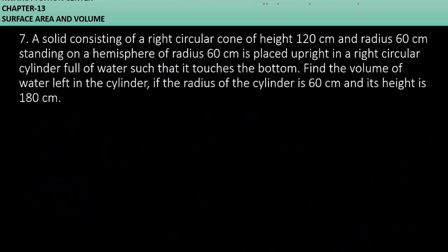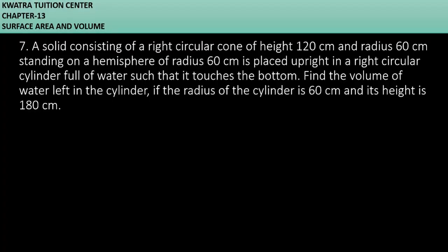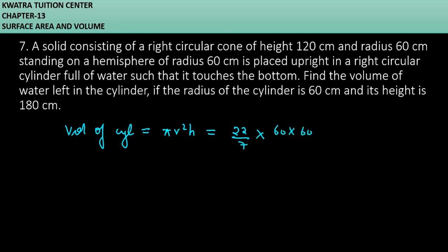Next, we calculate the volume of the cylinder, which is πr²h. Using π = 22/7, r = 60, and h = 180, the volume of the cylinder comes out to be 2,034,720 cm³.